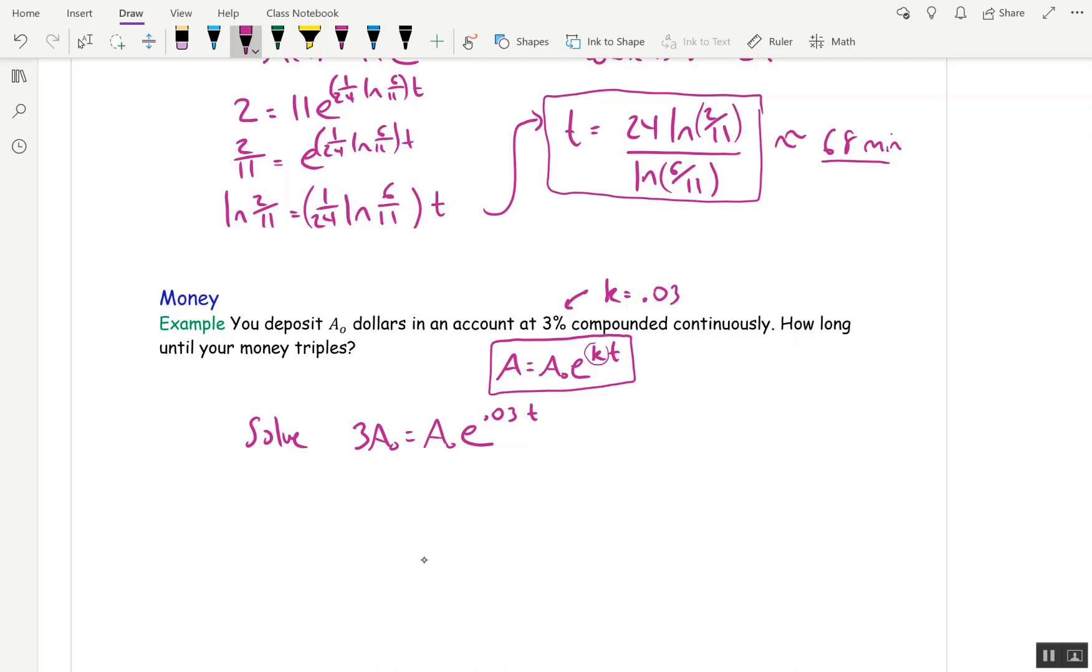Now, before you can take log of both sides, you need to get rid of that A₀, but fortunately it's on both sides. So you cancel it out. And then ln of 3 is E to the, sorry, when we take ln of E to the 0.03, we get 0.03T. And so divide both sides by 0.03 and we get T is ln 3 divided by 0.03. And I've already done that out on Desmos and I did it to one decimal and I got 36.6 years.